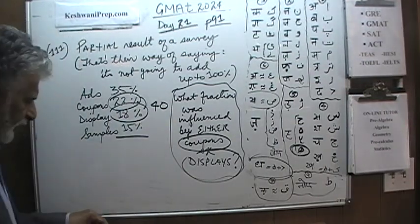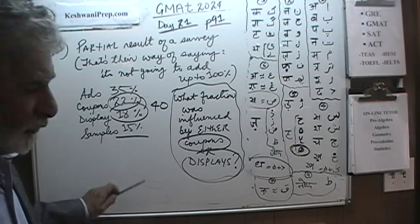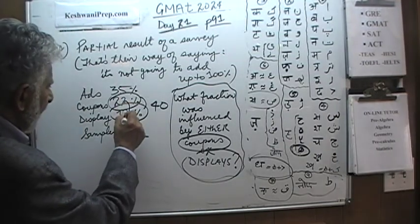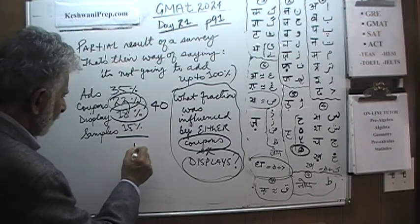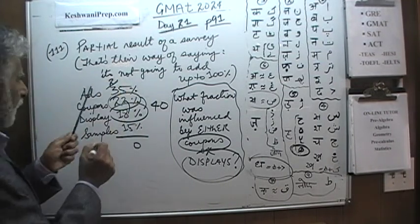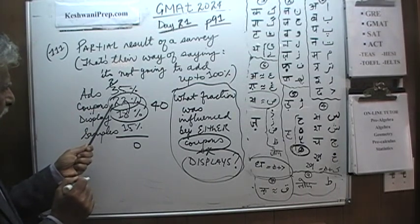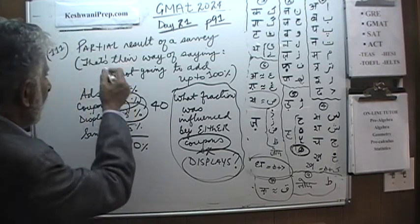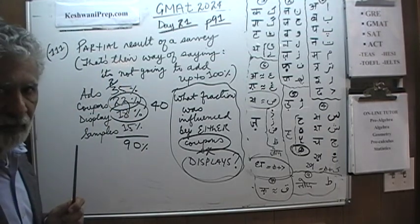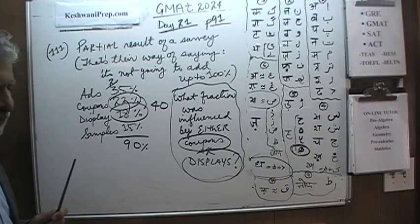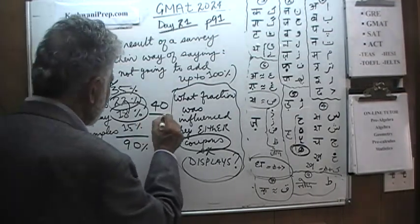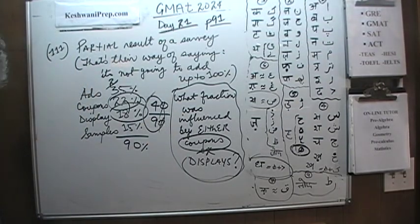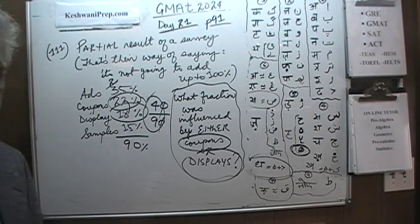Let us head up to see what the total percentage was of these 4 categories. So again, 2 plus 8 is going to make it 10. That is a 5 and that is a 5, that is 20. So 0, carry 2. 2 plus 3 is 5, 5 plus 2 is 7, 8, 9. It looks like it is 90%. That is why it is a partial result because it does not account for the remaining 10%. But it does not matter. We are asked to work with this thing. So it is 40 out of 90. The answer is 4/9. What fraction was influenced either by coupons or display? The answer is 4/9. Let us do number 112.